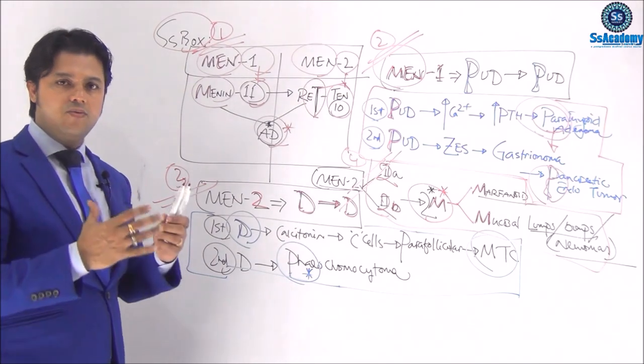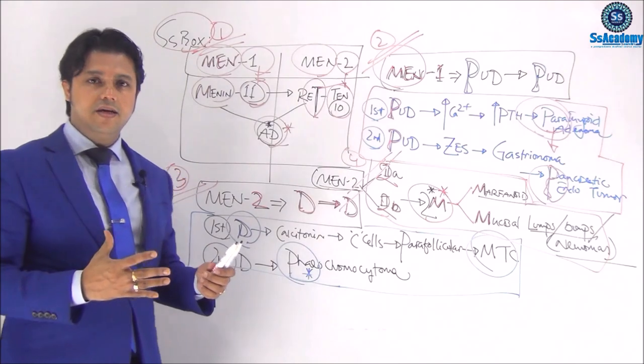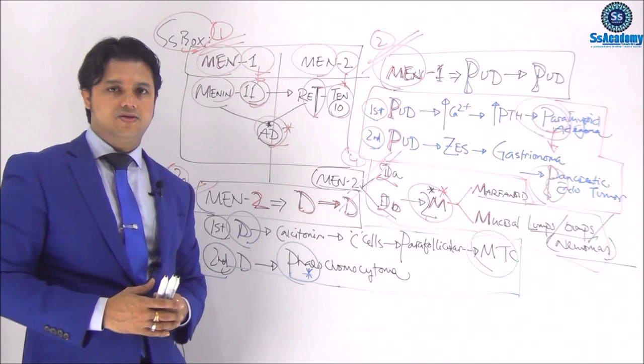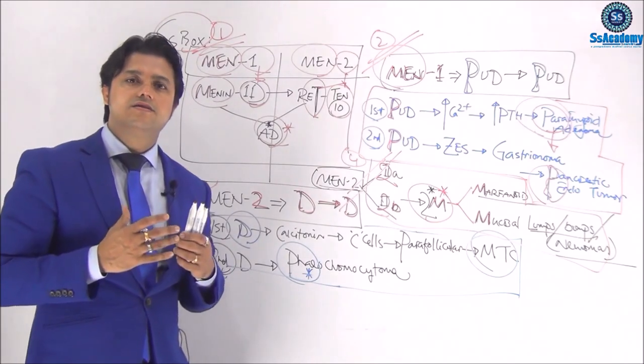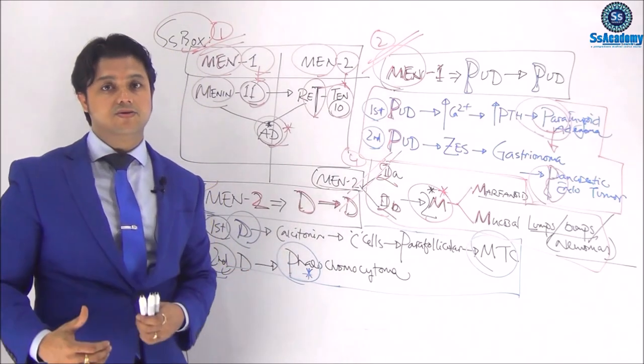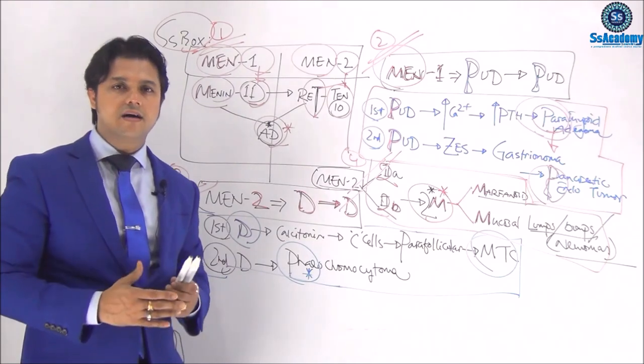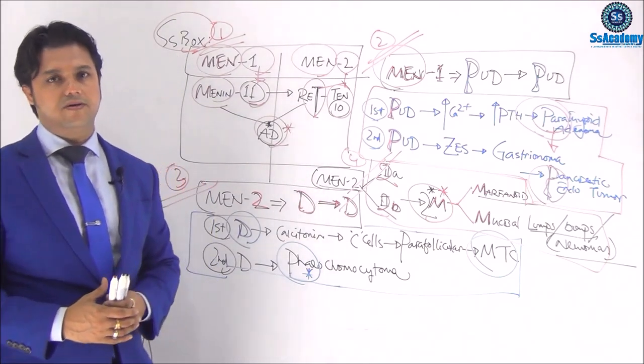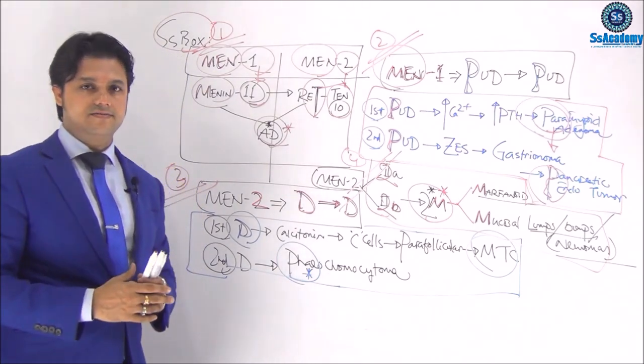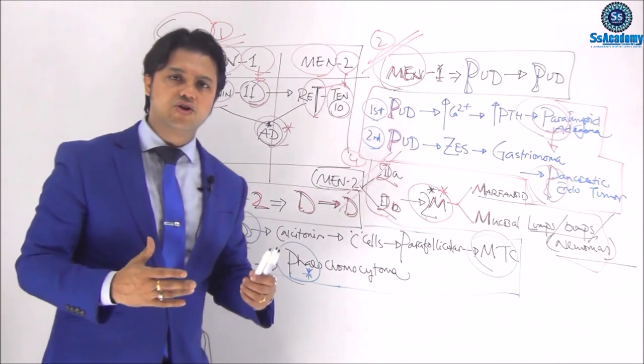Summary talk once again. MEN-1, MEN-2. Both are MEN for menin, 1 for 11. MEN-2 for RET or RET, 2 for 10. Autosomal dominant. Second box, MEN-1. MEN-1 is putie followed by putie. MEN-2 is diarrhea followed by diarrhea. And third talk is, MEN type 2B is really important. Type 2B means 2M pictures. 2M pictures means Marfanoid habitus and mucosal neuromas.